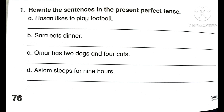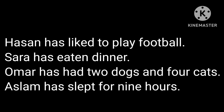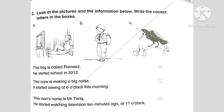Number One: Write the sentences in the present perfect tense. Some simple sentences are given to convert. (a) Hasan likes to play football → 'Hasan has liked to play football.' (b) Sara eats dinner → 'Sara has eaten dinner.' (c) Umar has two dogs and four cats → 'Umar has had two dogs and four cats.' (d) Aslam sleeps for nine hours → 'Aslam has slept for nine hours.'